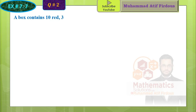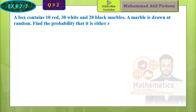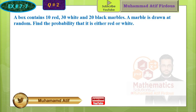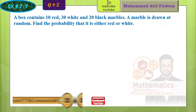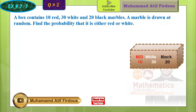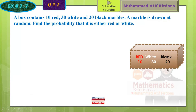Let's start with question number 2, which is related to your smart syllabus. A box contains 10 red, 30 white, and 20 black marbles. A marble is drawn at random. You have to find the probability that it is either a red or white marble.